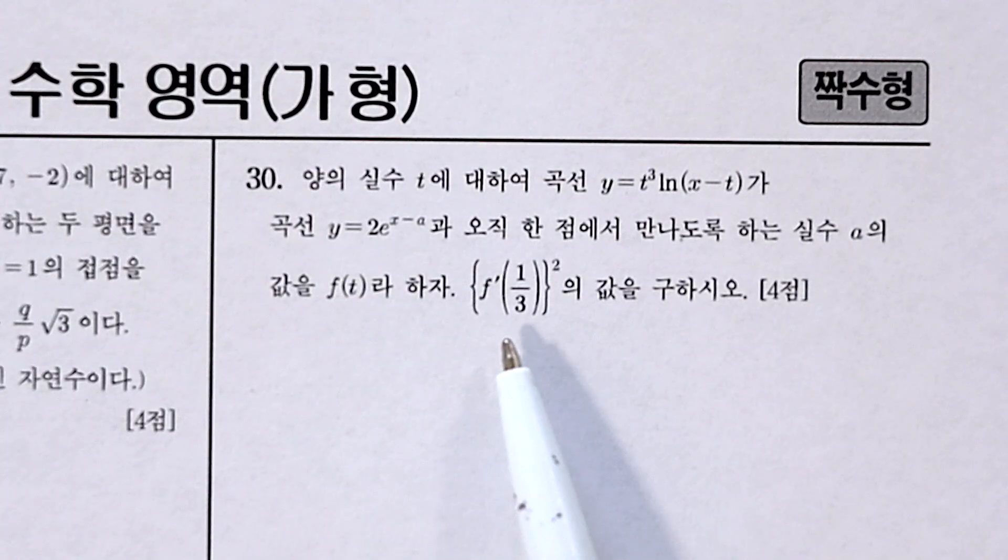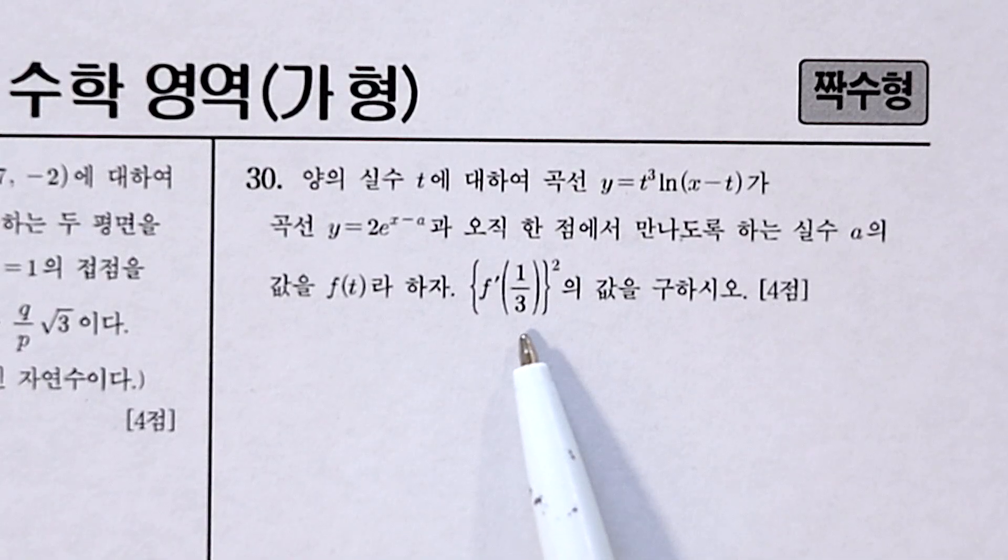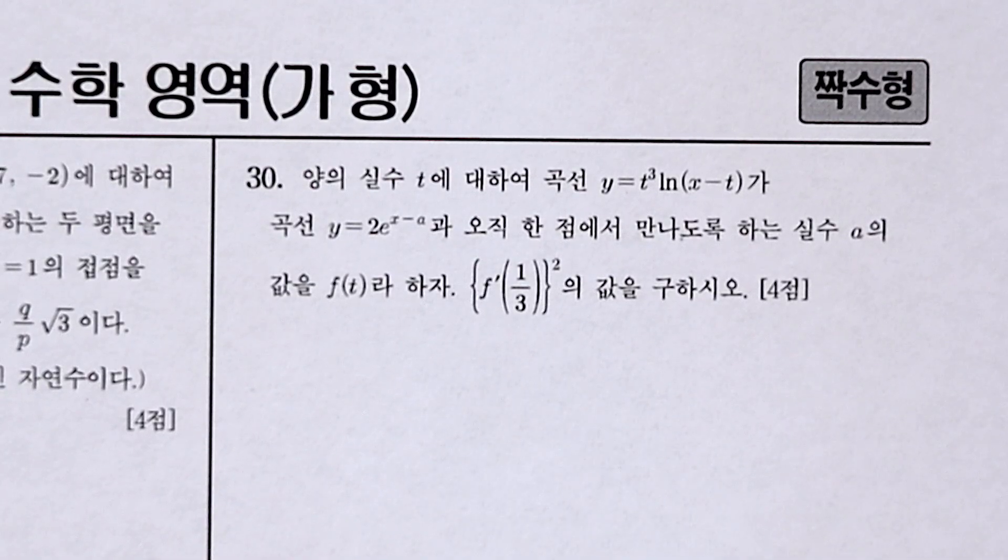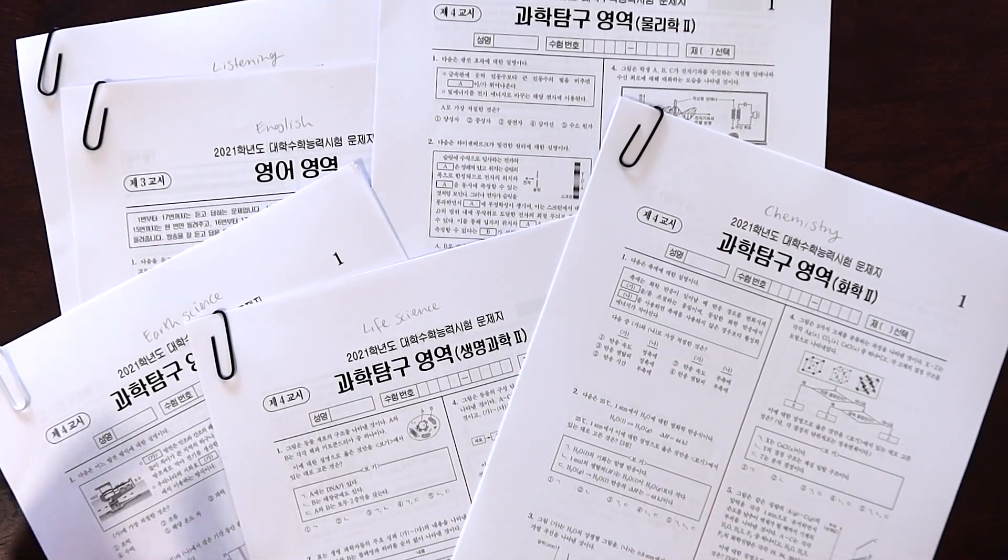Then we're asked to find the square of f prime when t is equal to one third. Have a think about what you might want to do here. I'll come back at the end and show my version of a solution. But first let's look at some other sections.